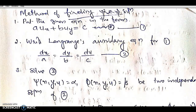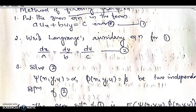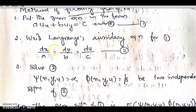From the auxiliary equation we obtain ordinary differential equations: dy/dx = b/a, and du/dx = c/a.